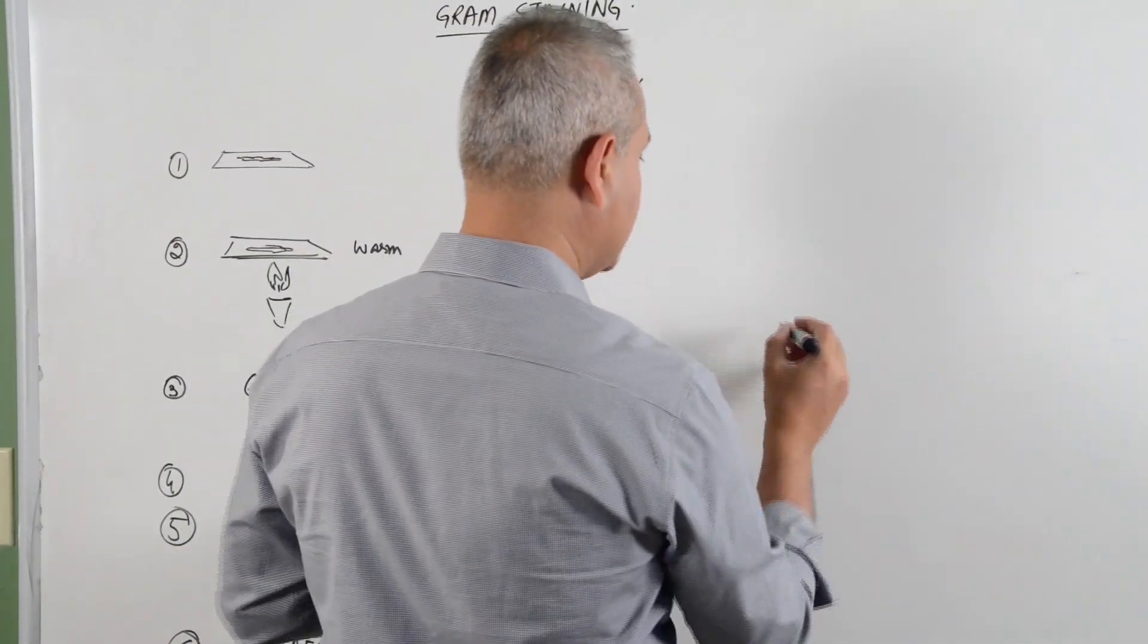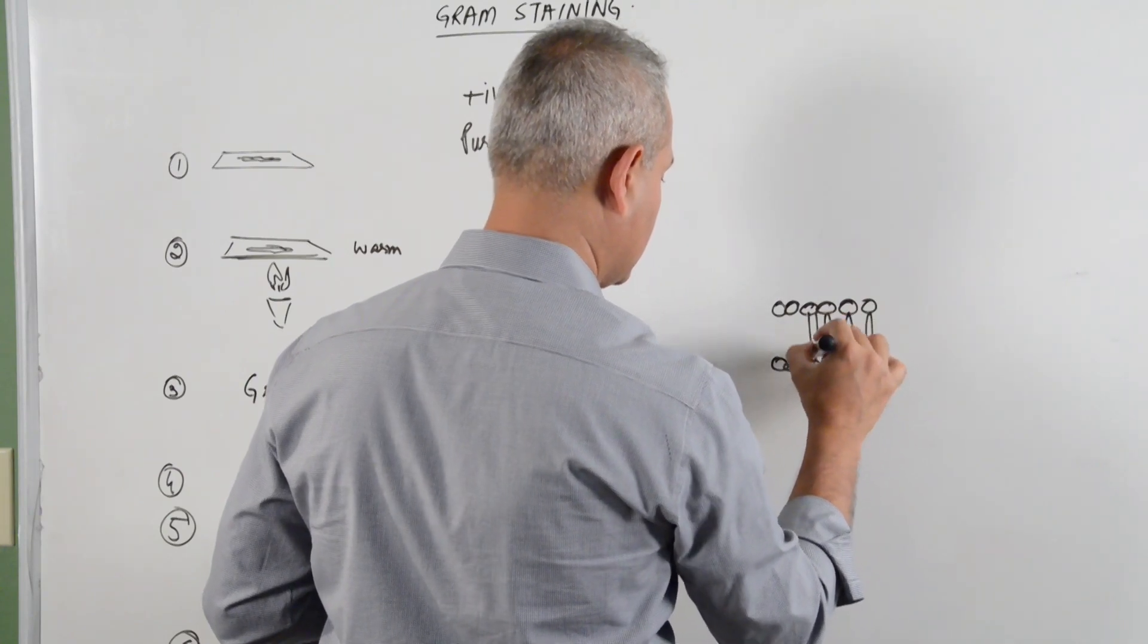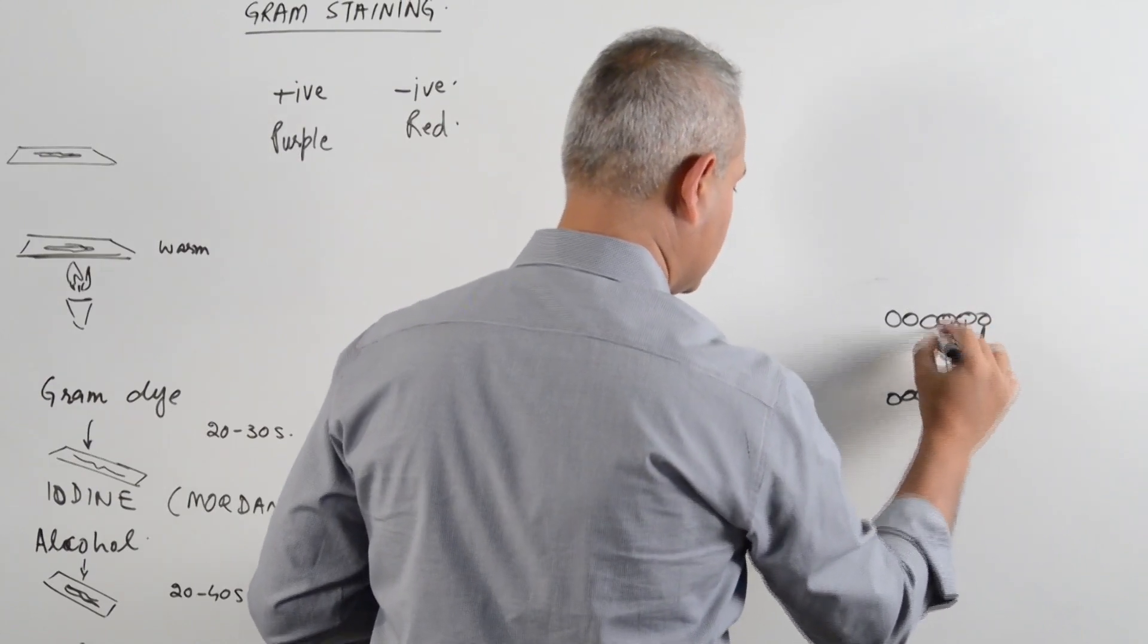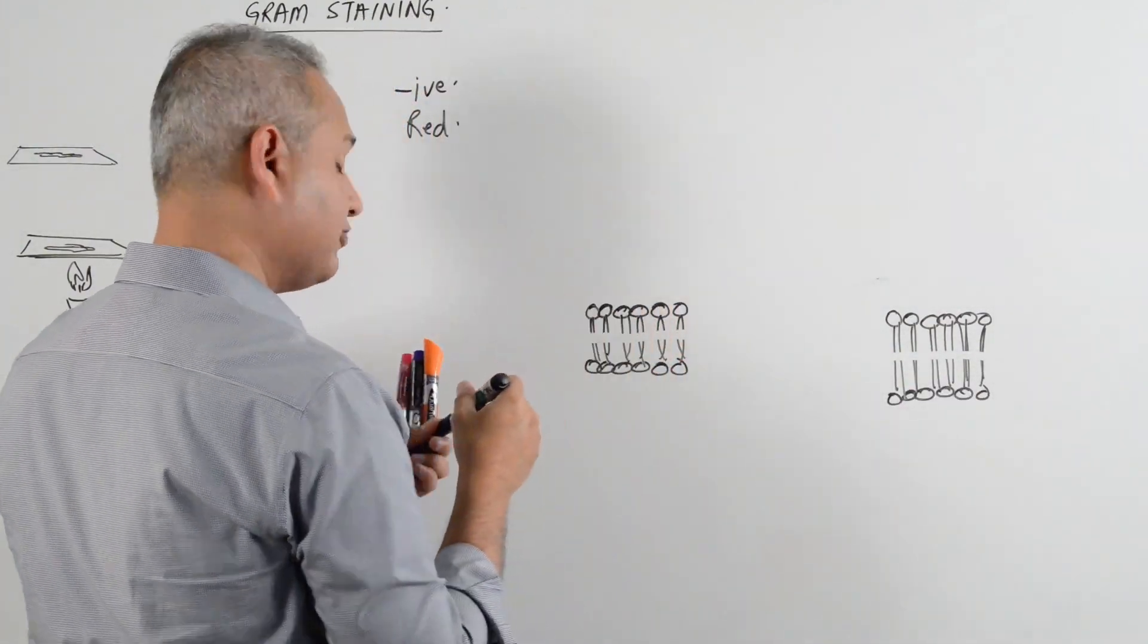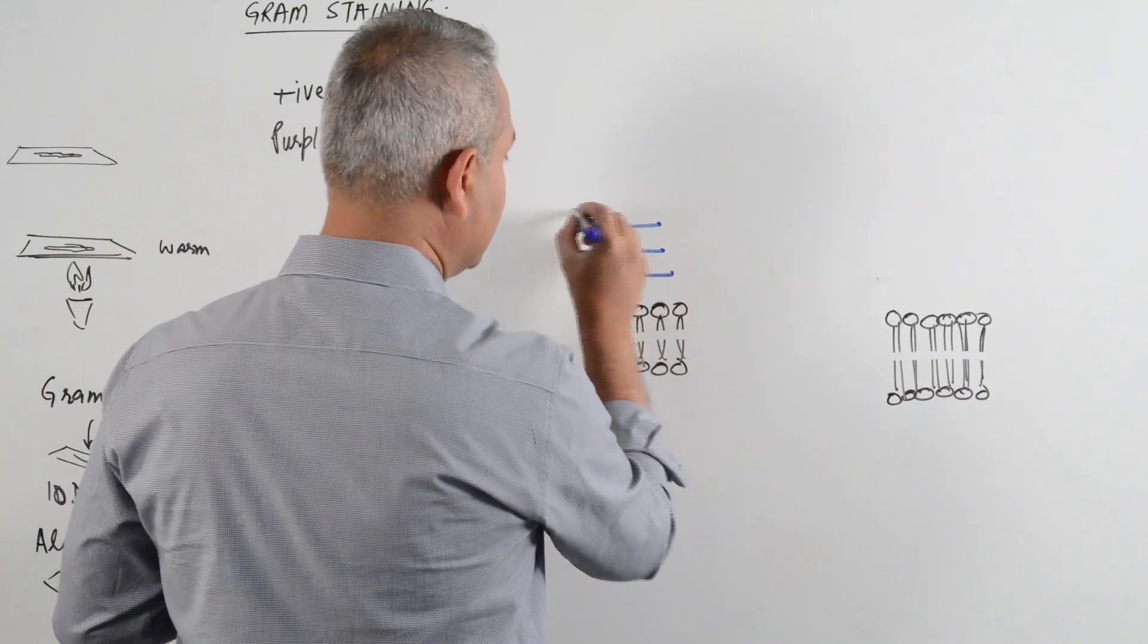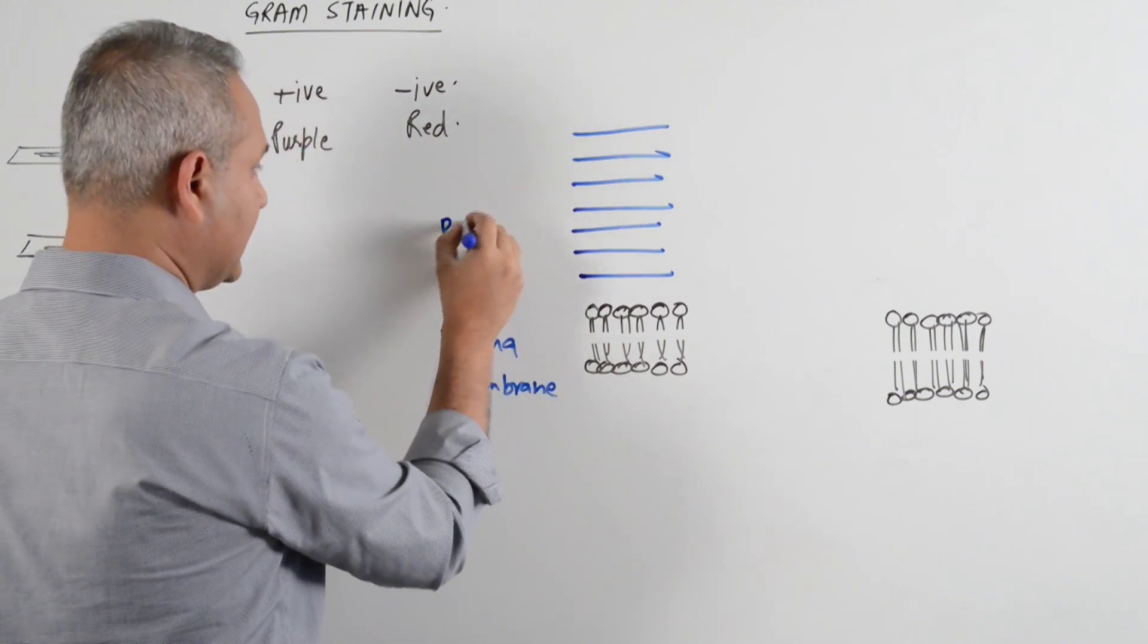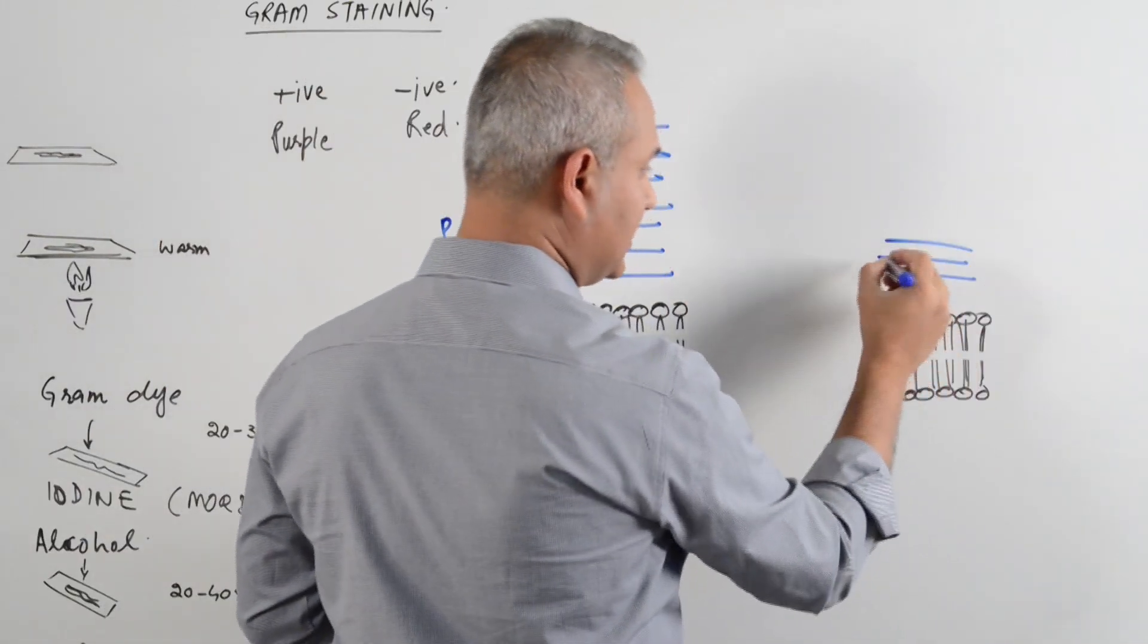So this is the Gram positive bacteria's plasma membrane. This is Gram negative bacteria's plasma membrane, so lipid bilayer, phospholipid bilayer. On top of that, we know that on the Gram positive bacteria's we have peptidoglycan, so this is plasma membrane. This is peptidoglycan layer and you know that this can be up to 60 layers. And here periplasmic space and up to 3 layers.